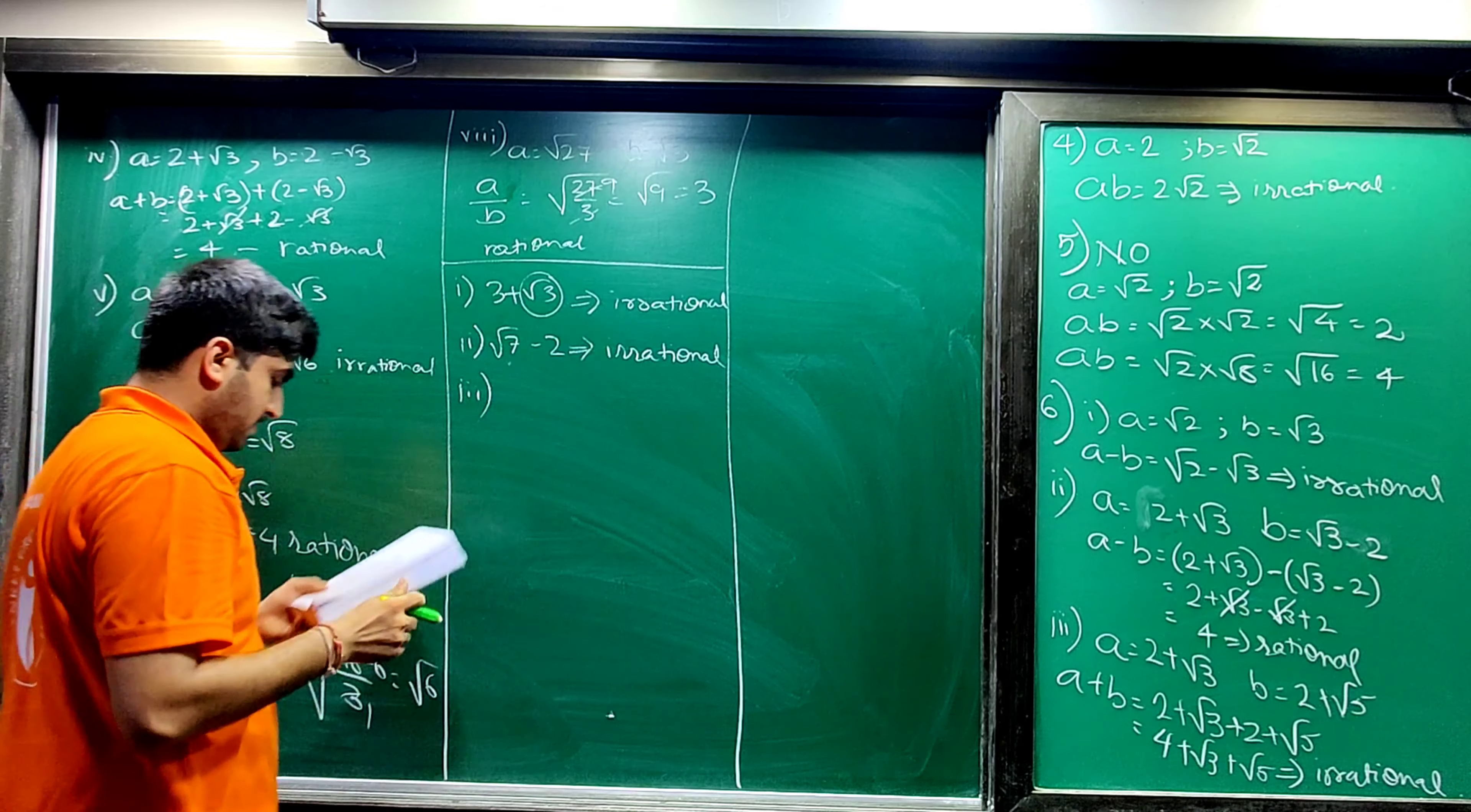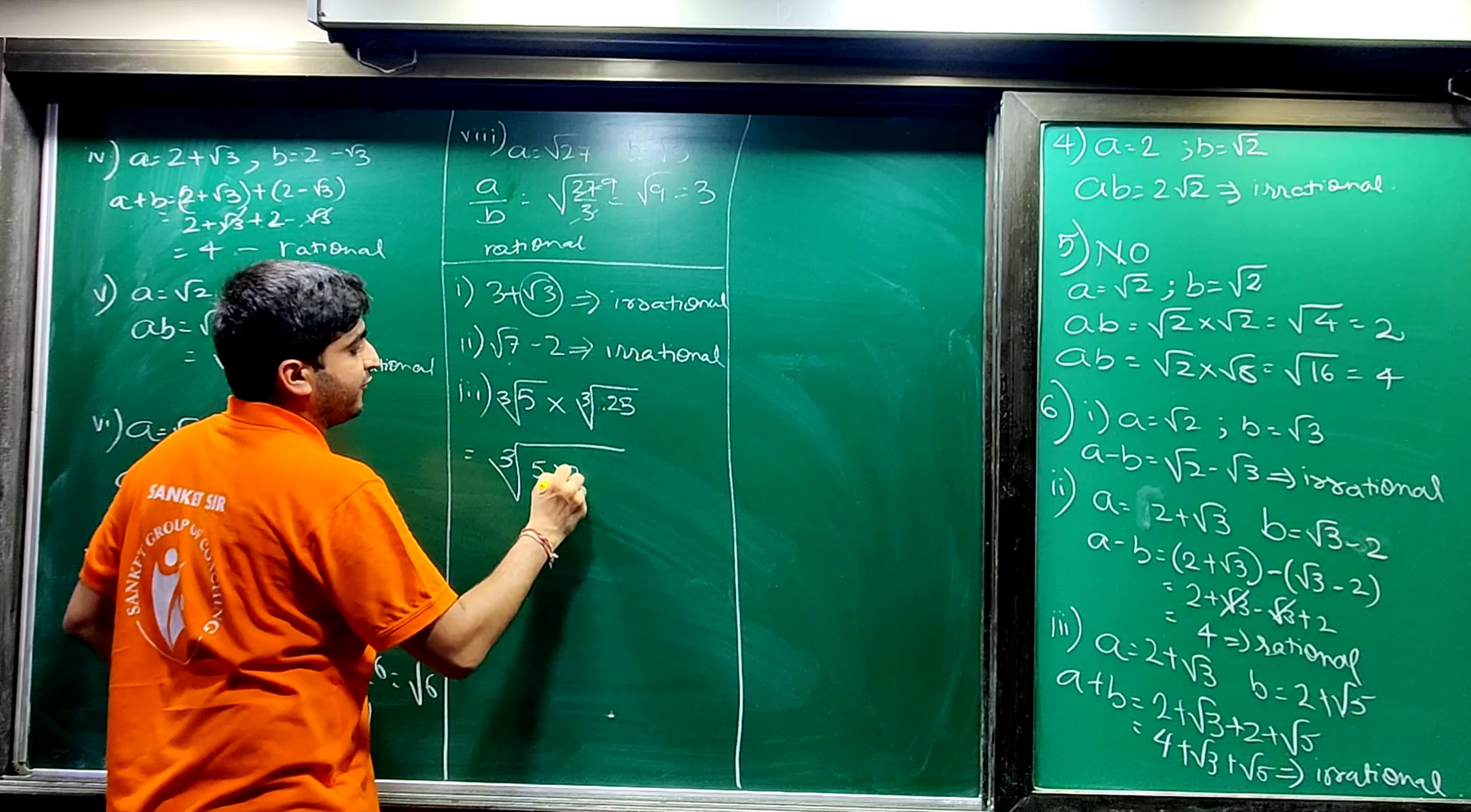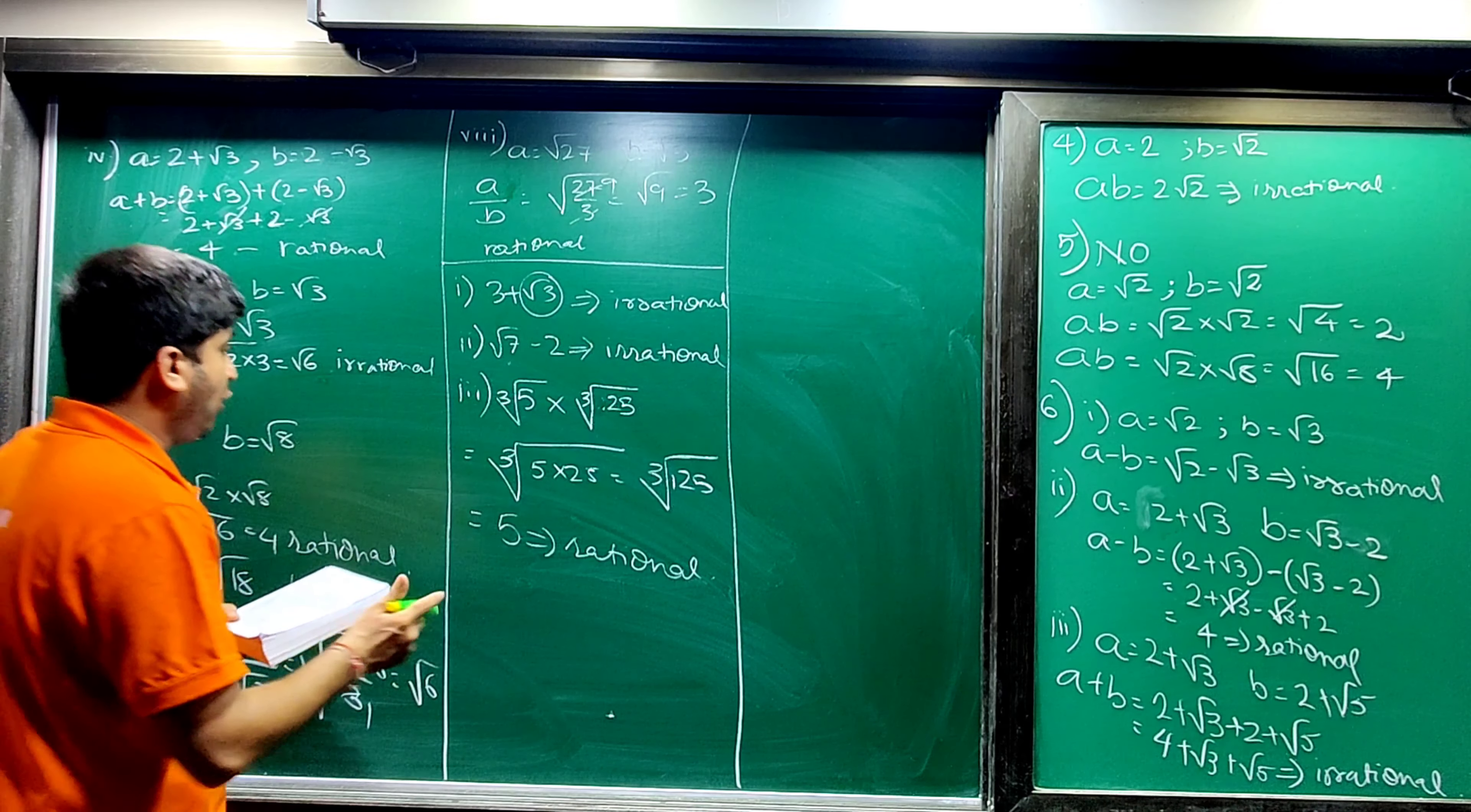Next, third: cube root of 5 multiplied by cube root of 125. So I will write this like this: cube root of 5 to 25, which is equal to cube root of 125. And cube root of 125, the answer is 5, which is a rational number.